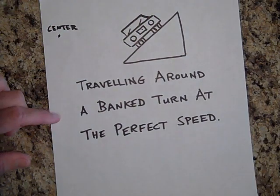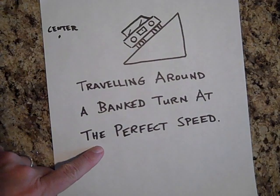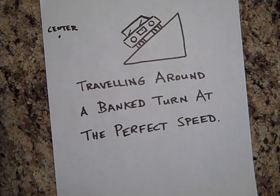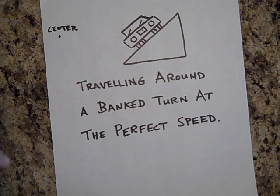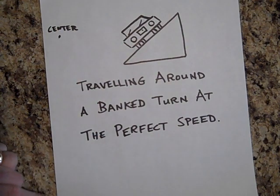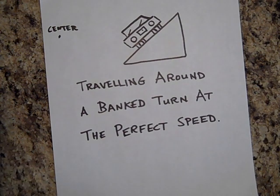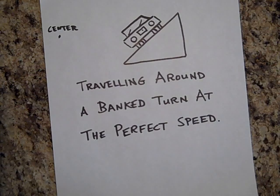Notice that it's traveling at the perfect speed — its tires are not being distorted one way or the other. At the perfect speed, you can go around a banked turn without any friction at all. Just the normal force — a component of the normal force provides the centripetal acceleration, the centripetal force.